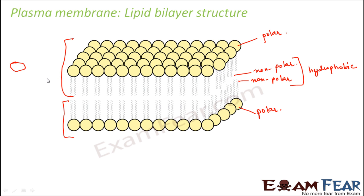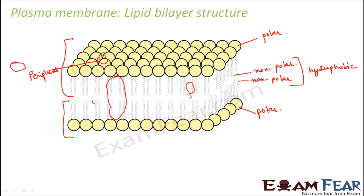Now where are the proteins? I mentioned that there are proteins embedded here and there. When you actually look at the structure, you have proteins embedded — maybe here, maybe here, or maybe here. The proteins can be of two types: integral proteins and peripheral proteins. Peripheral proteins are those towards the periphery, that is towards the surface. Integral proteins are those which are inside this membrane.